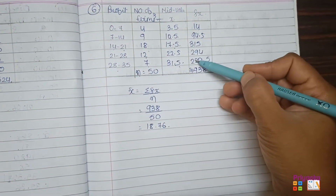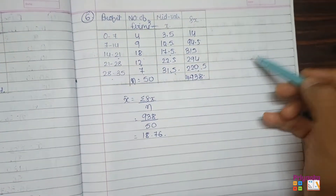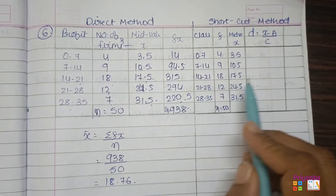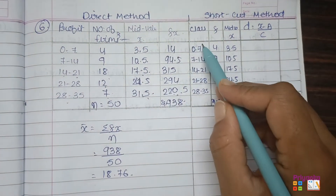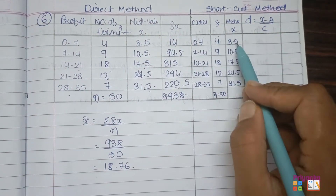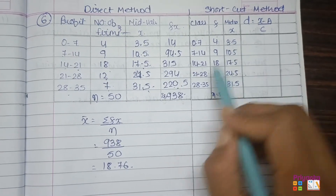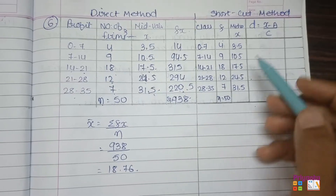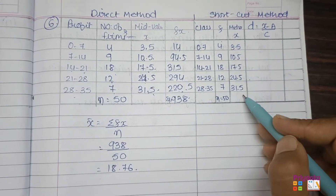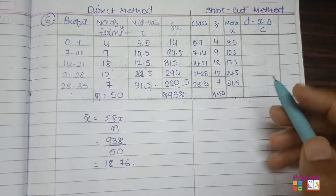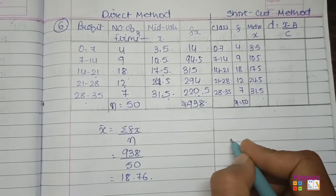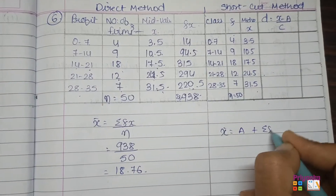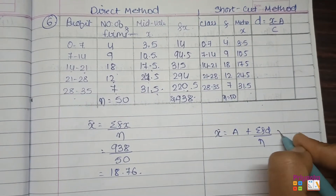If you want to calculate the same thing with the shortcut method, that will also work. I will show you for question 6. For the shortcut method, I took the class, frequency, and mid value from the question. Note that here the mid value is 24.5, not 22. So mid values are 3.5, 10.5, 17.5, 24.5, and 31.5.